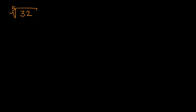Let's see if we can calculate the fifth root of 32. Pause the video and see if you can figure this out on your own. Let's remind ourselves what a fifth root is. If x is equal to the fifth root of 32, that's the same thing as saying that x to the fifth power is equal to 32. So we have to find some number where if you take five of them and multiply them together, you get 32.